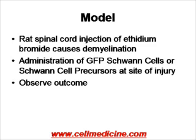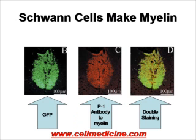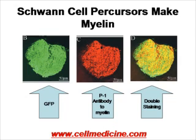Initially, the authors demonstrated that after direct transplantation of the green cells into the injured spinal cord, at one month there are still green Schwann cells surviving. The Schwann cells do make myelin, confirmed by anti-myelin antibody staining, and double staining shows the green cells are the ones making myelin. The same survival and myelin production is confirmed for Schwann cell precursors at one month.